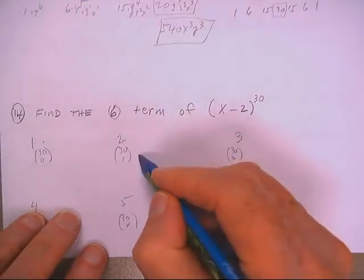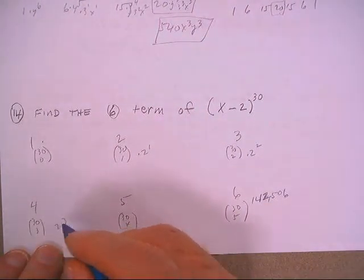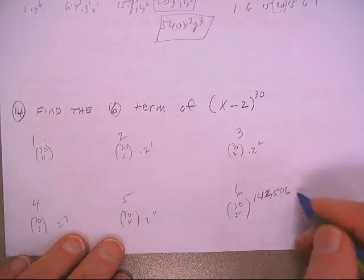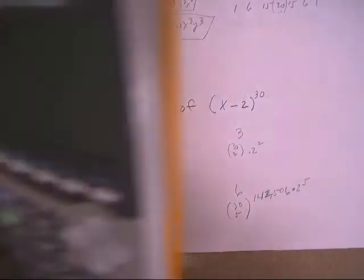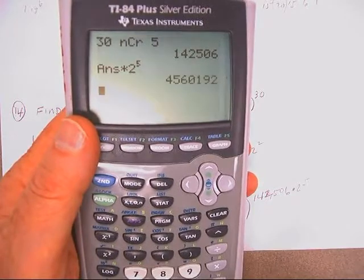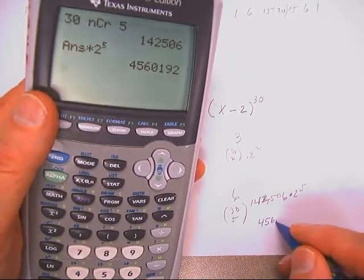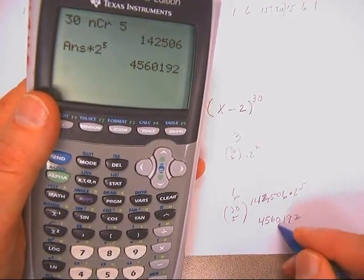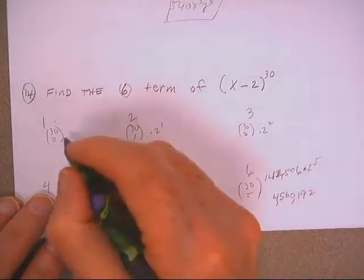Okay, and then I've got 2 to the first, 2 to the second, 2 to the third, 2 to the fourth, 2 to the fifth times 2 to the fifth. 4,560,192. Now I need the x.